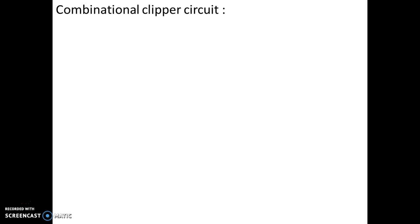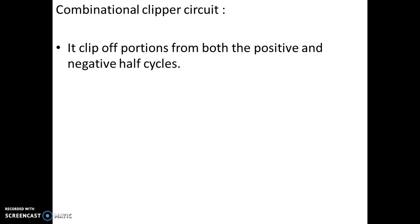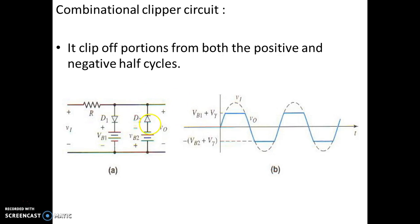The third classification is the combinational clipper circuit. A combinational clipper circuit is a combination of both positive and negative clippers, so it clips off portions from both positive and negative half cycles. The circuit contains a single resistor and two diodes, D1 and D2, each used for clipping either the positive or negative half cycles. The resulting waveform is shown as the darkened line.